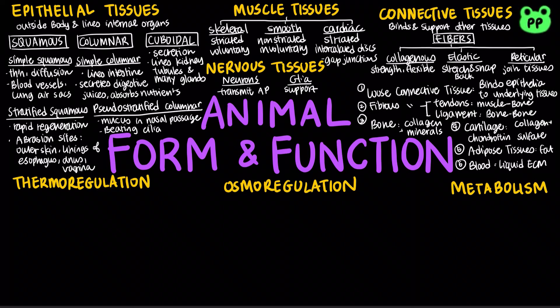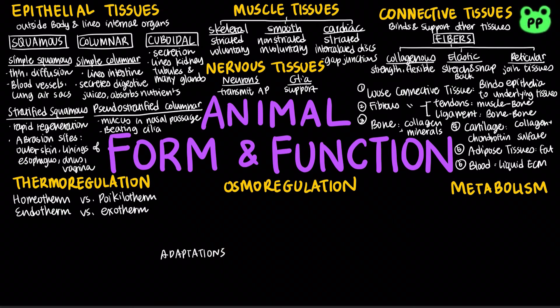Thermoregulation is the ability of an organism to keep its body temperature within certain boundaries. Homeotherms keep a constant body temperature, whereas poikilotherms' body temperature varies with the environment. Endotherms generate heat by metabolism, such as mammals and birds, whereas ectotherms gain heat from external sources, such as reptiles.